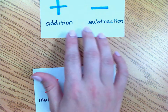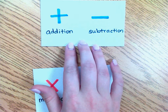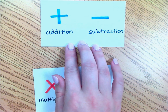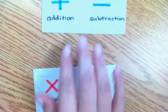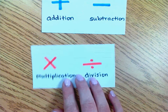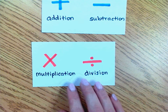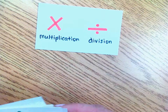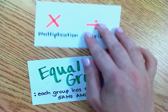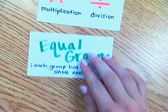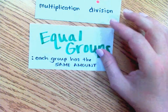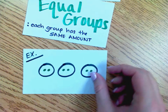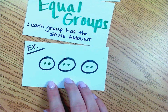Whereas addition and subtraction involve putting together and taking apart, multiplication and division deal with information around equal groups of objects. Equal groups of objects are when each group has the same amount, such as this example.